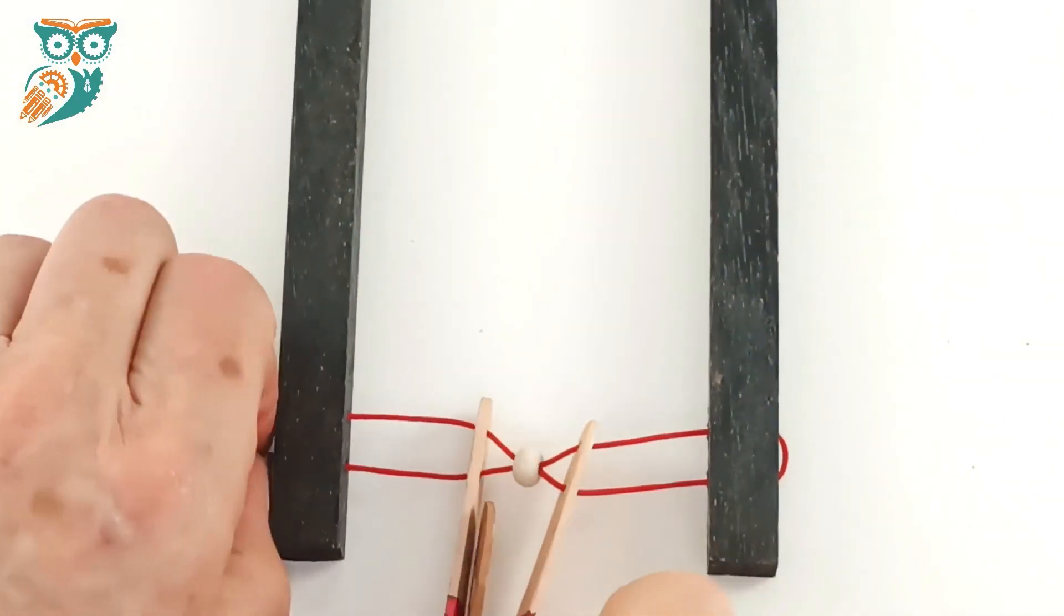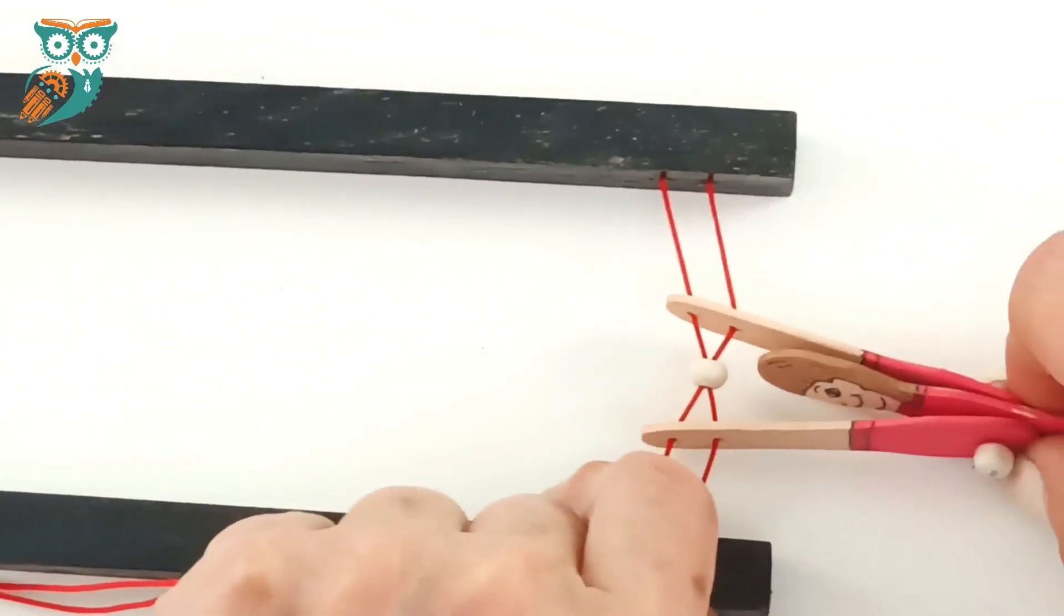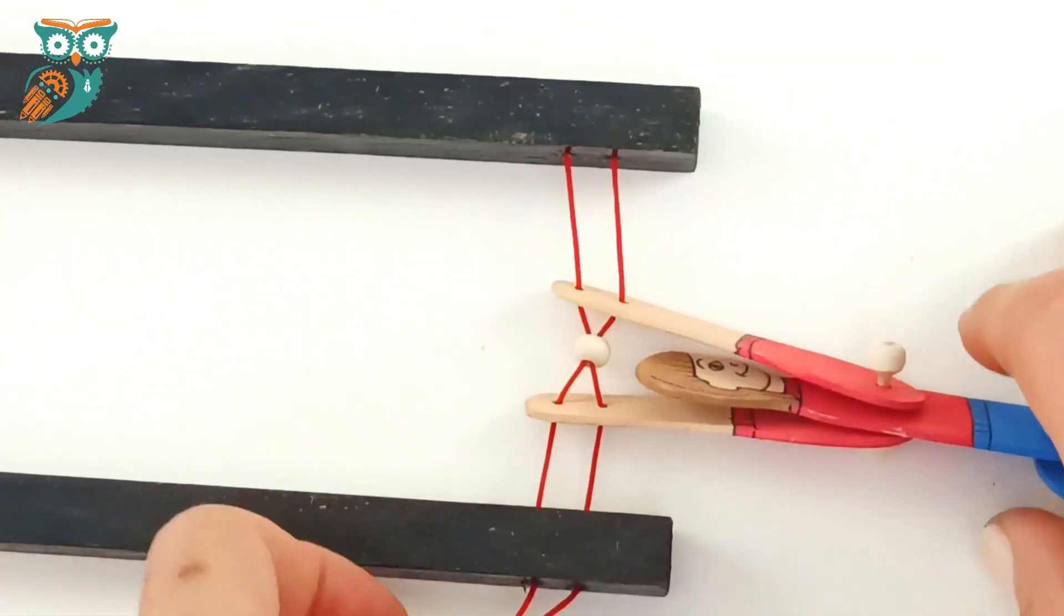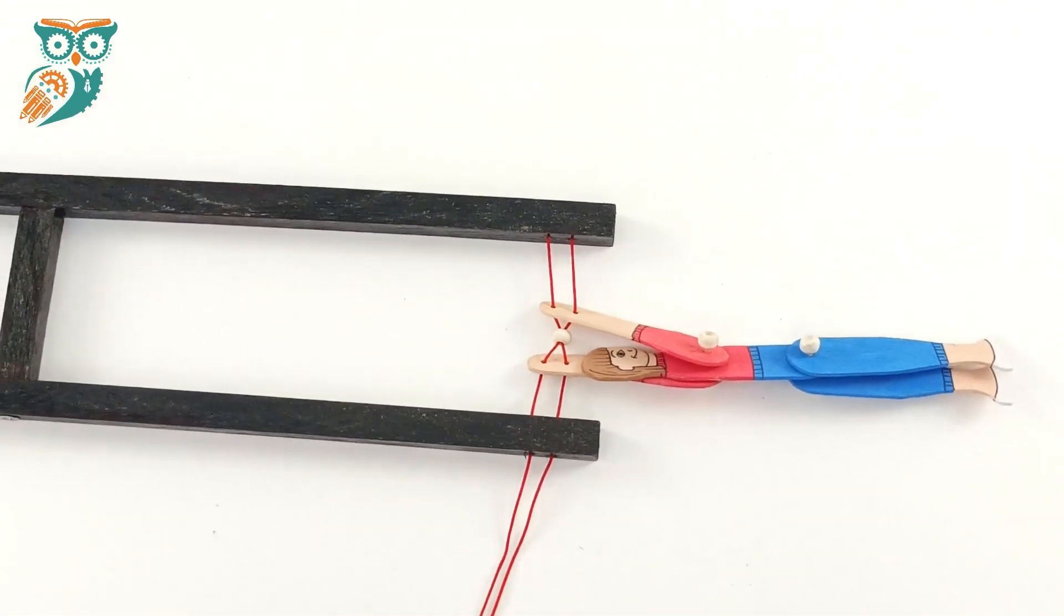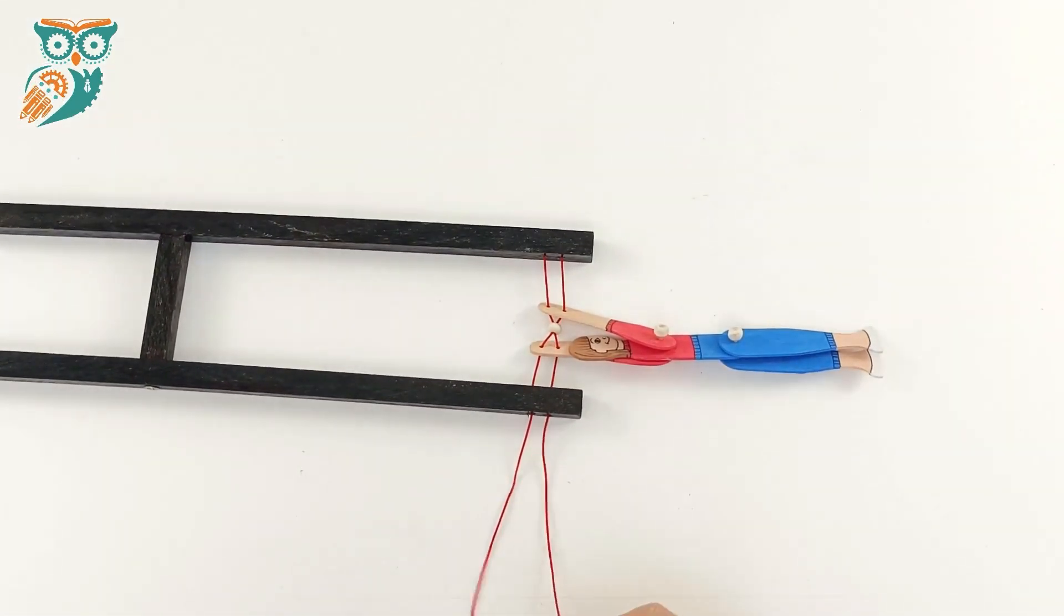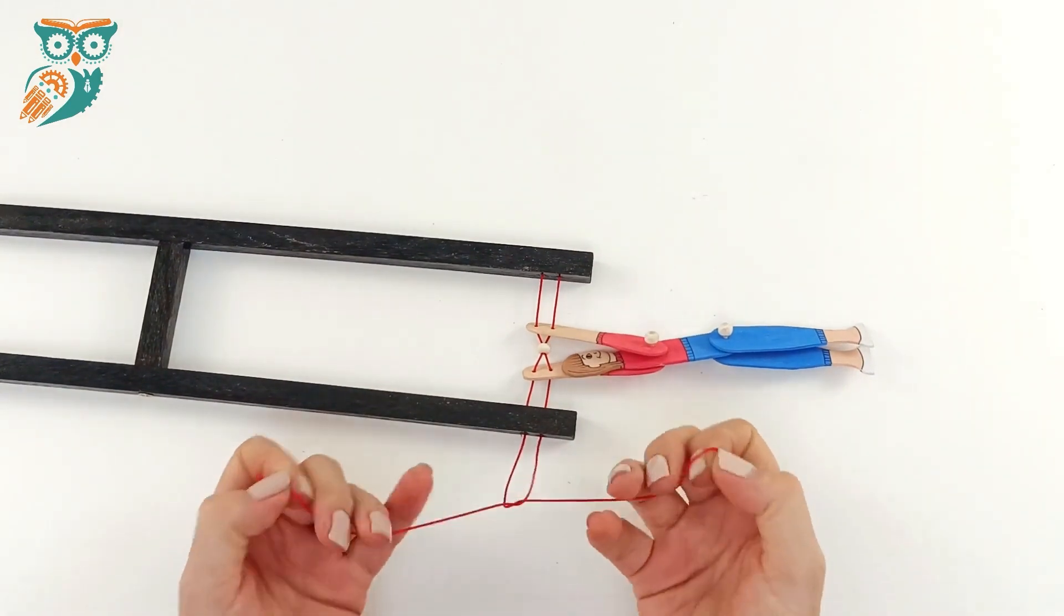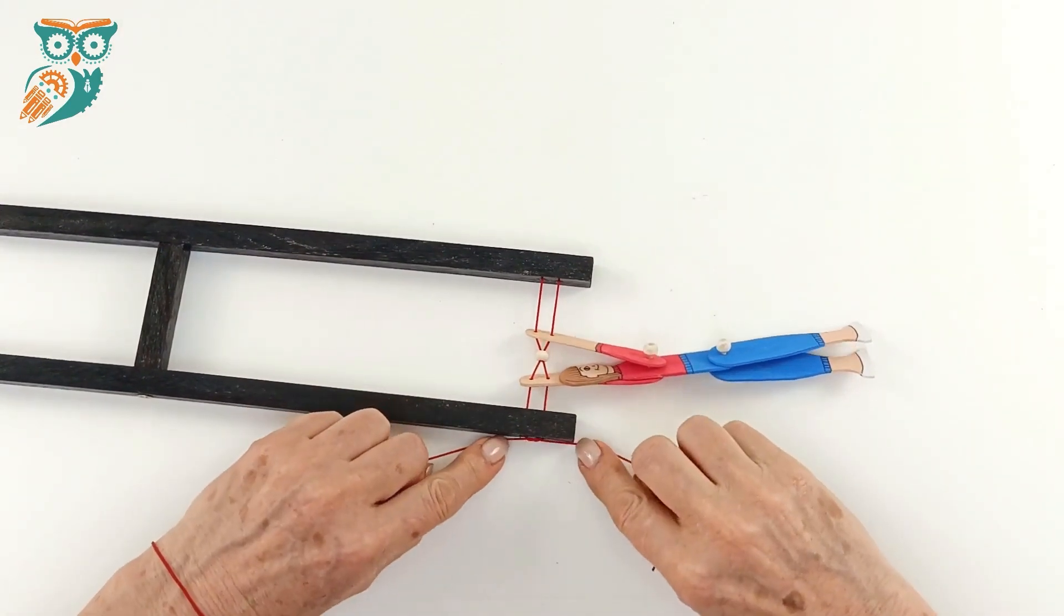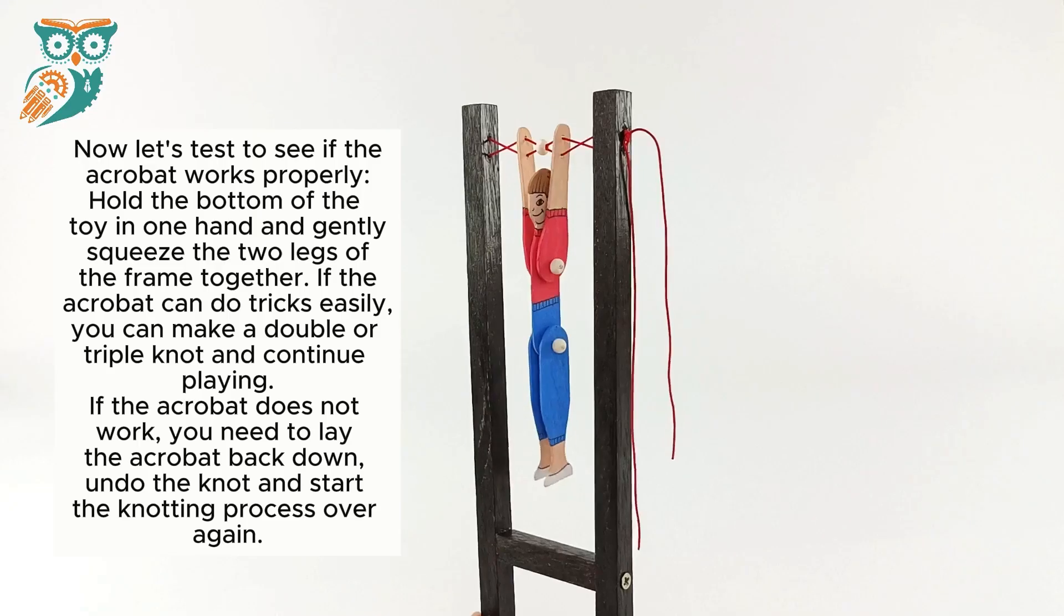Now we're going to tie off that thread and we'll just zoom out a little bit here so you can see a bit more about what's happening. There's our acrobat attached to their frame, so we're going to tie it off. Now don't tie it off too tight. If it's too tight, your acrobat won't be able to work. You want to make sure that you put a nice secure knot in there without any inward pressure.